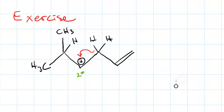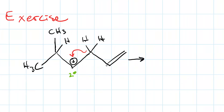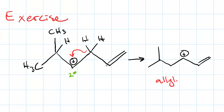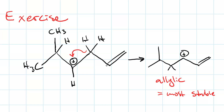So there's our curved arrow. Now let's draw the result. We have two hydrogens here — one of these came from the shift — and don't forget there's still one hydrogen here.